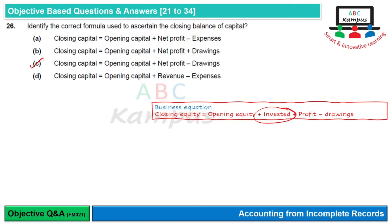Option A में गलती यह है कि expenses को include किया है। Option D में भी यही गलती है। Option B में drawings को add किया है — यह mistake है। तो C option is correct।